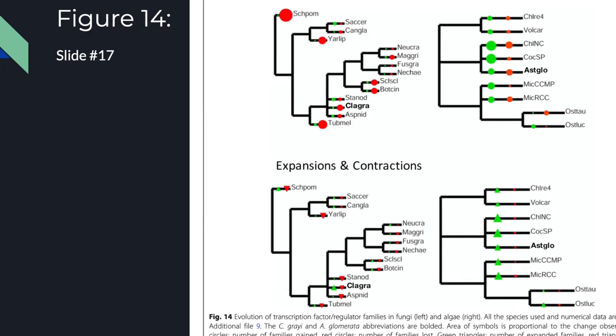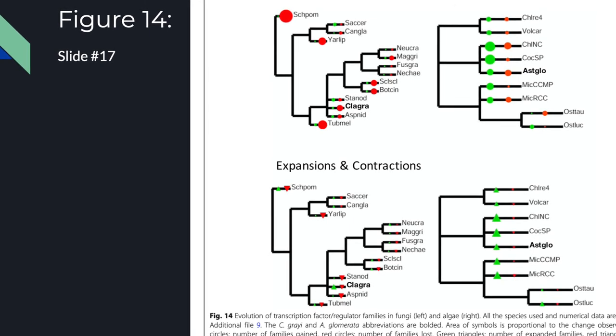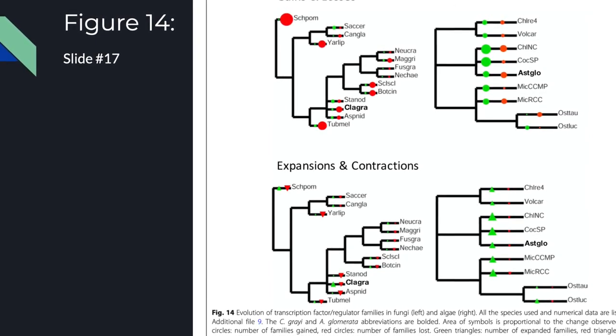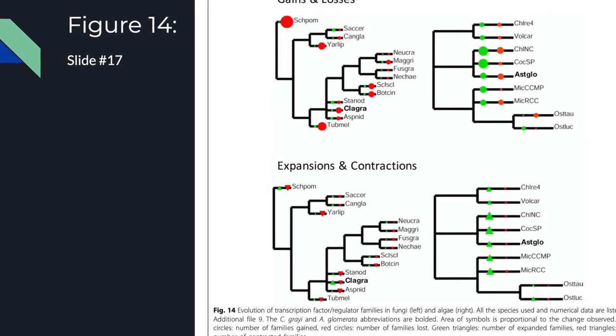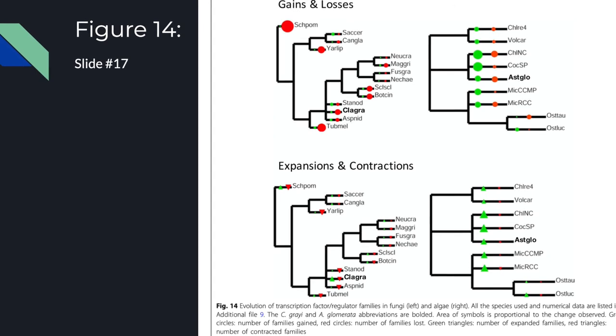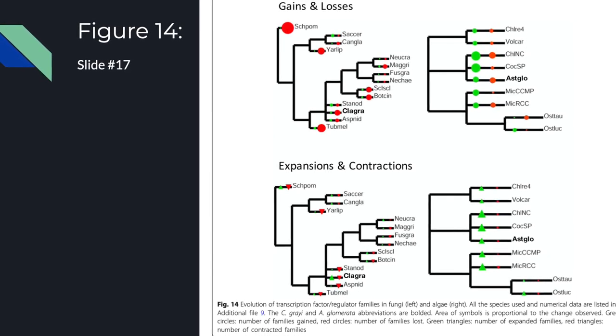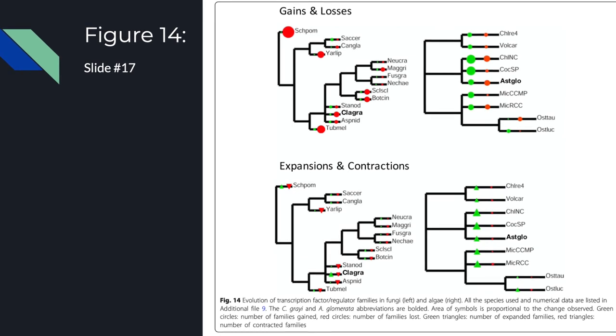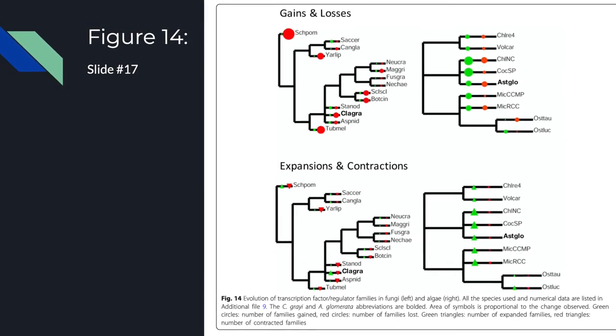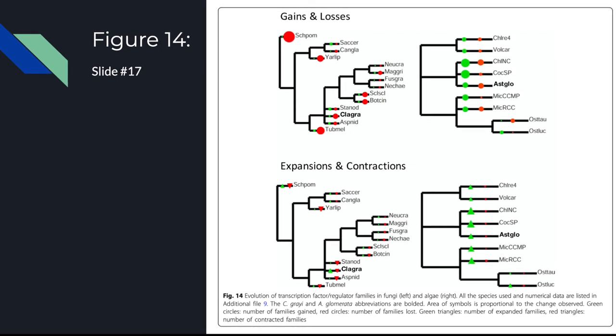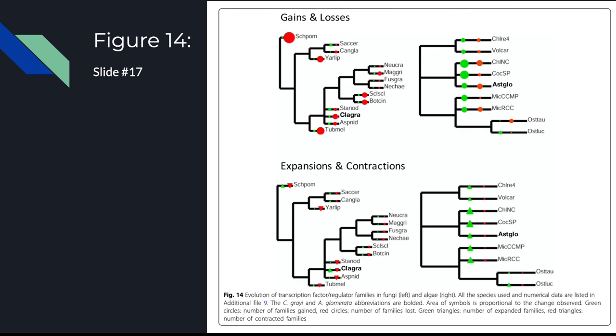Looking at expanding and contracting transcriptional factors in cladonia and non-lichenized fungi the researchers noticed cladonia has undergone expansion more than non-lichenized fungi hinting this is due to symbiotic relationship of cladonia. If you look at figure 14 the green triangles are expanding families, red triangles are contracting families the fungi are on the left the algae are on the right, green circle are families gained red circles are families lost. And the researchers try to conclude the plasticity of the transcriptional families may be due to the ability of both symbionts to live on their own stress is placed on lichens by repeated rapid enlarged oscillations and their exposure to light temperature or hydration might have led to the expansion of stress-related transcriptional factors in both symbionts.